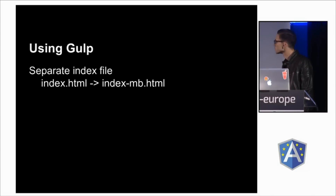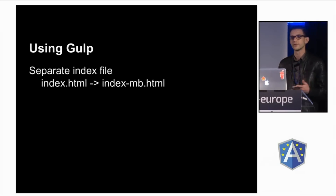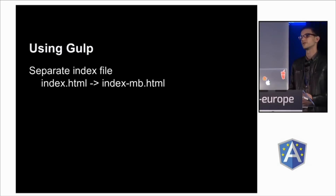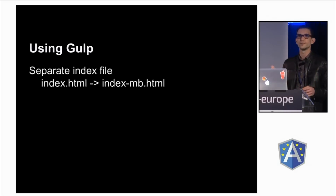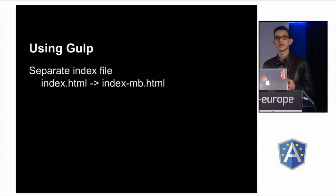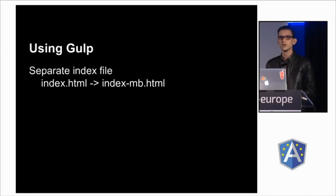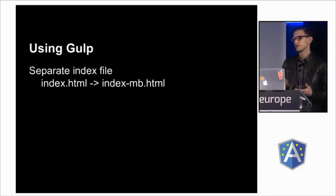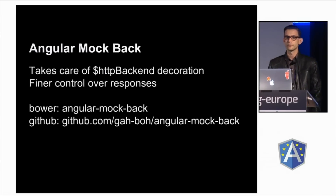Everything starts with Gulp for me, because I want to create a separate index file — one that has the live services, and then the index-mb in this example — because I want to be able to have the mock and the live version so I can switch back and forth. The reason for this is because I'm pretty lazy, and if it's not easy to switch back and forth, I won't check the services when they're available, and then there will be a bug I have to deal with down the line. It's a simple step but definitely very important.